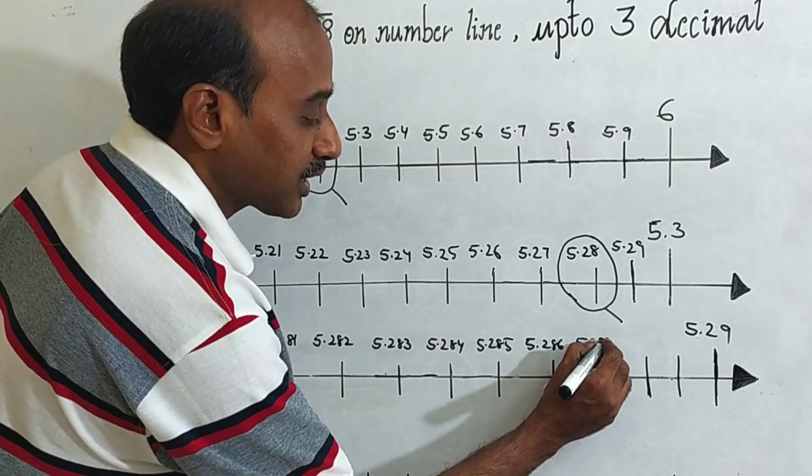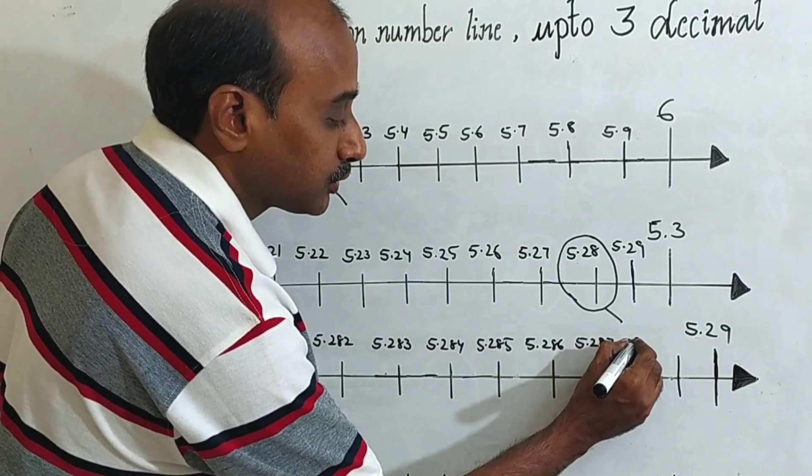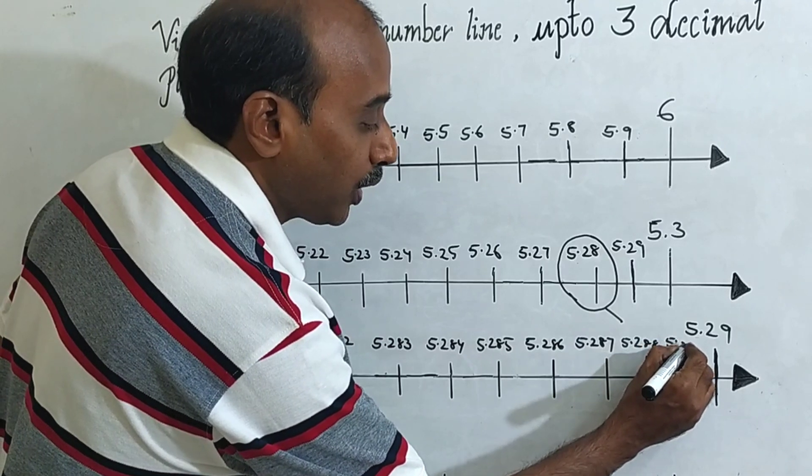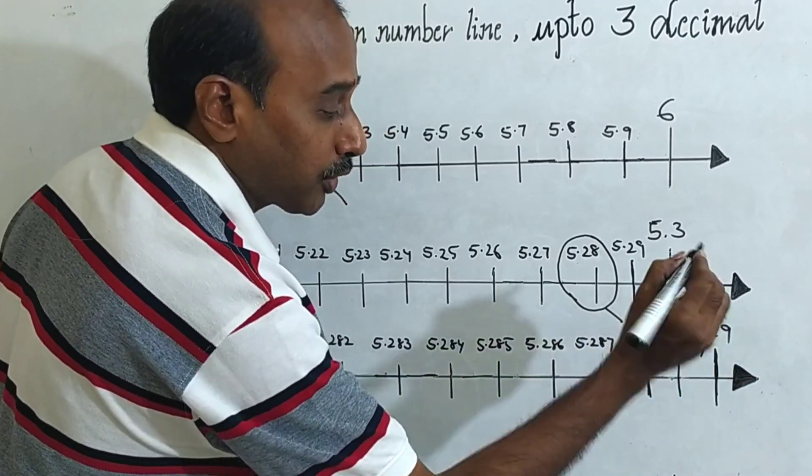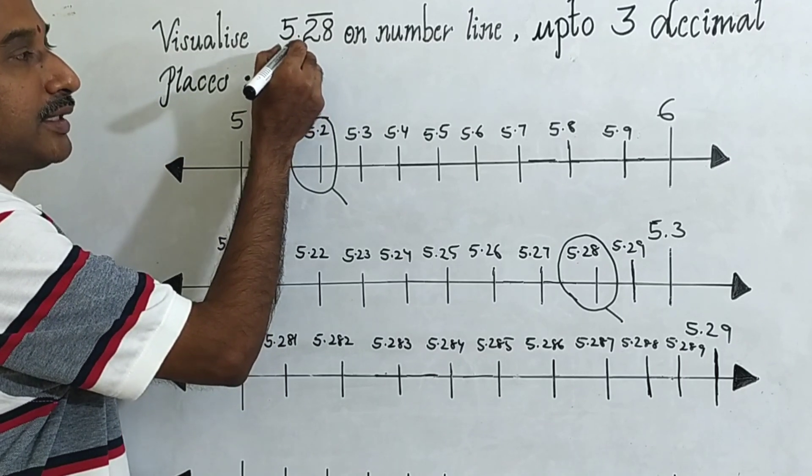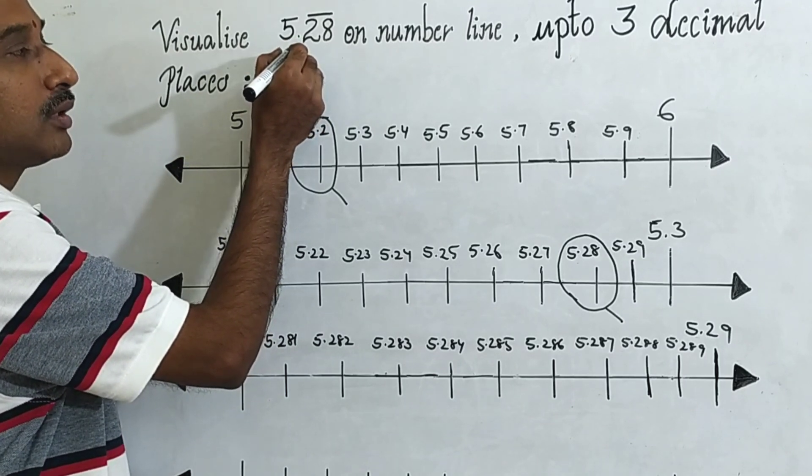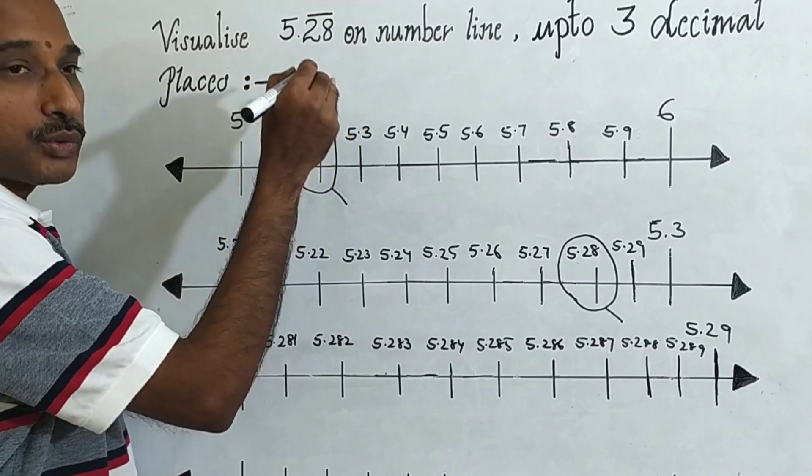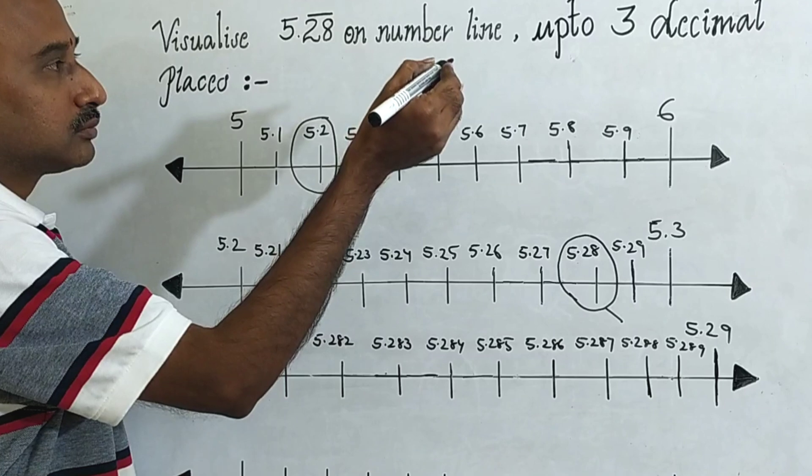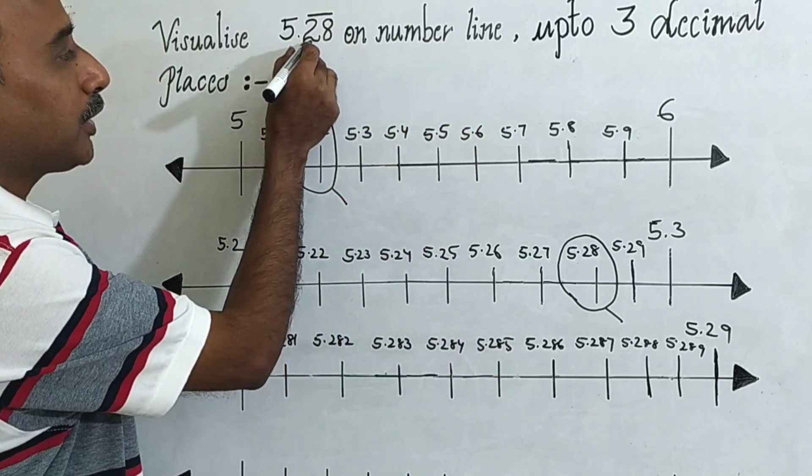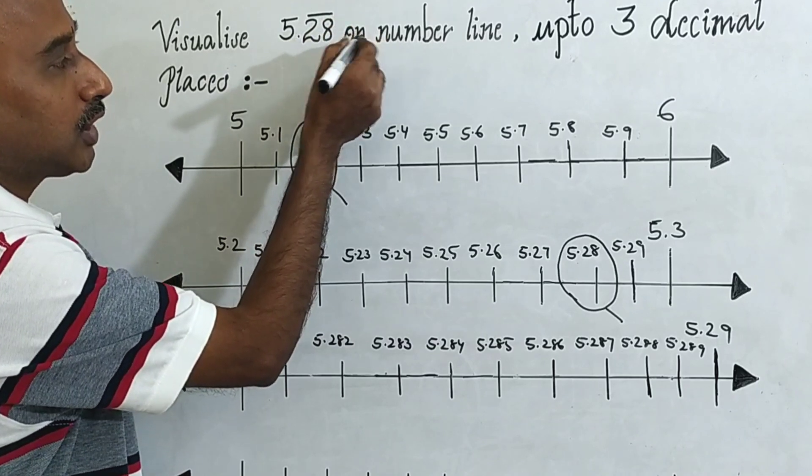Then 5.29. This is a non-terminating recurring decimal. Now you can see here this is 5.28 28 28 28 and so on. Here we can see 5.28, next is 2, so 5.282.